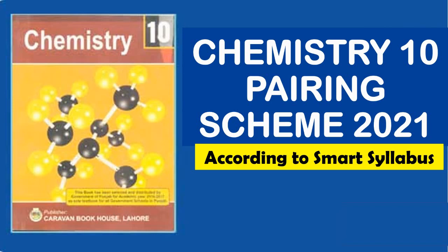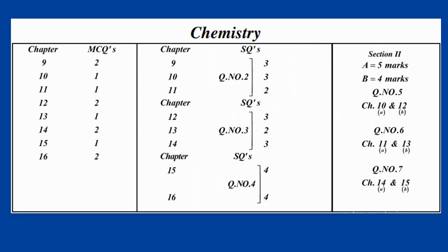The 10th class chemistry pairing scheme for MCQs will be as follows: Chapter 9 has 2 MCQs, Chapter 10 has 1 MCQ, Chapter 11 has 1 MCQ, Chapter 12 has 2 MCQs, Chapter 13 has 1 MCQ, Chapter 14 has 2 MCQs, Chapter 15 has 1 MCQ, and Chapter 16 has 2 MCQs.